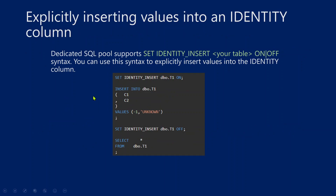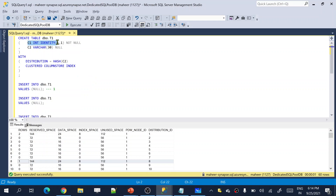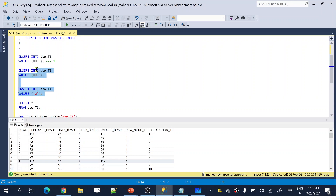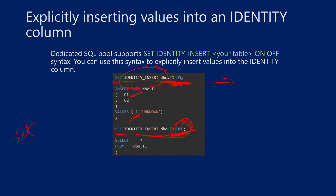If you want to explicitly insert identity column values, you can use SET IDENTITY_INSERT on a table to ON, and then supply the column value for C1 in your insert. This is the same as normal SQL. By default, identity insert is off for any table. Once you turn identity insert off using SET IDENTITY_INSERT table OFF, you cannot explicitly insert identity column values.